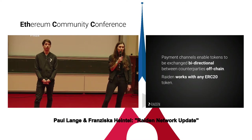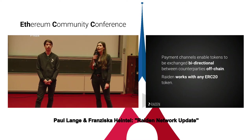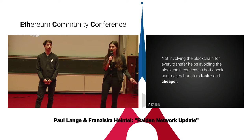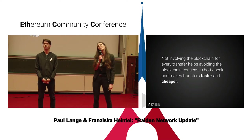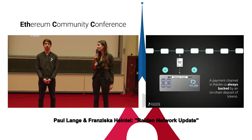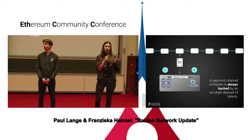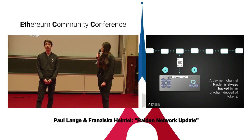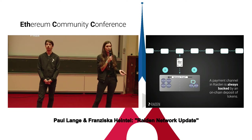We enable token exchanges to be bi-directional off-chain between counterparties, and it works with any ERC-20 token. Not involving the blockchain has some advantages — the biggest advantage is that you can avoid the consensus bottleneck, which makes transfers cheaper and faster than on-chain. The deposit is locked on-chain in a payment channel, which means you can only transfer value off-chain that you have locked within a smart contract on-chain.